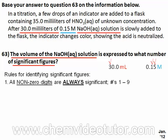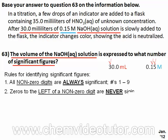Rule number 2 says that zeroes to the left of a non-zero digit are never significant, like in the 0.15 measurement. The zero is to the left of the 1 and therefore is not significant. Since we covered all of the numbers in this measurement, it is safe to say that it has two significant figures.